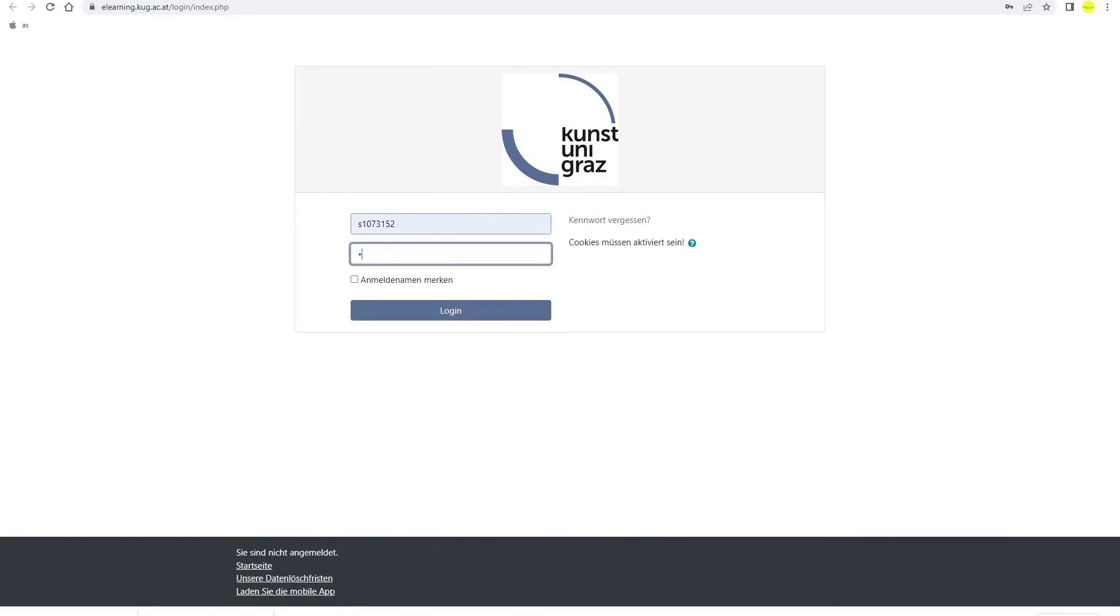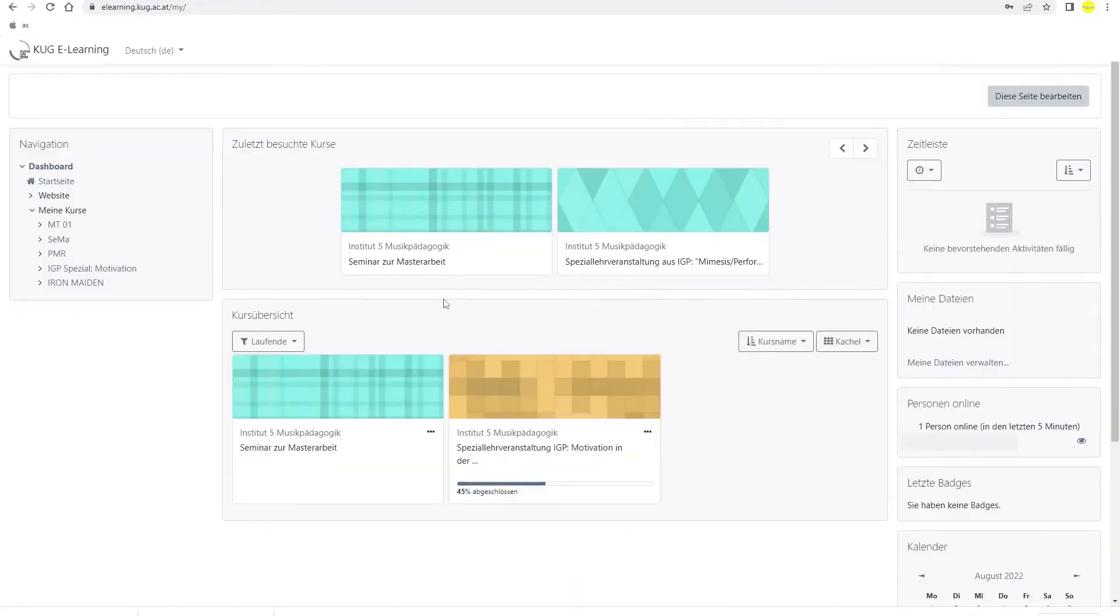E-learning, alternatively called Moodle, is a platform where you can find materials for some of your courses at the university. Here you can see what it looks like.